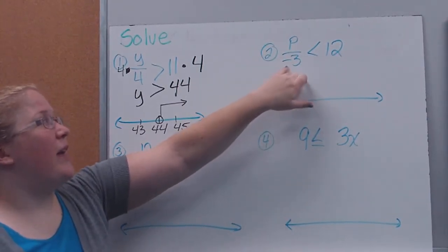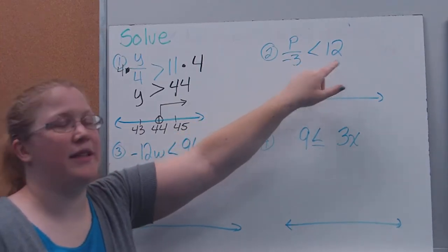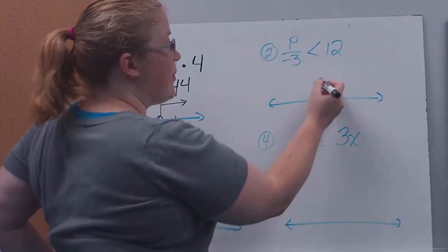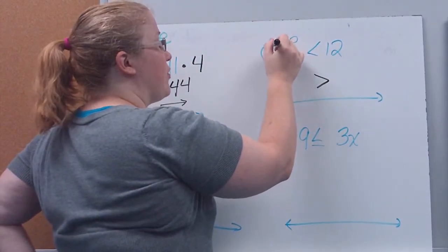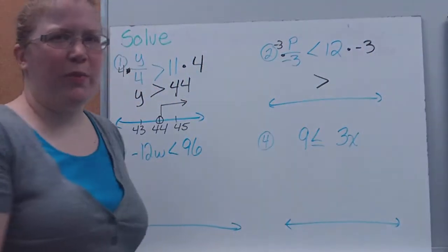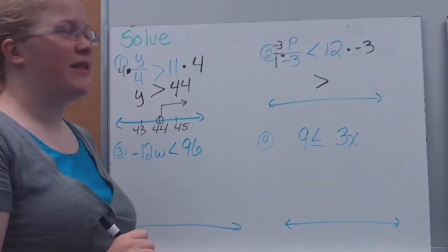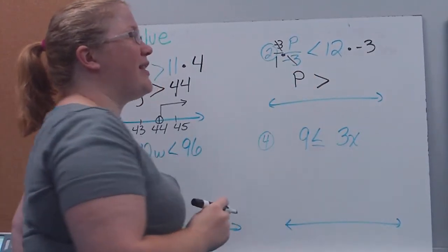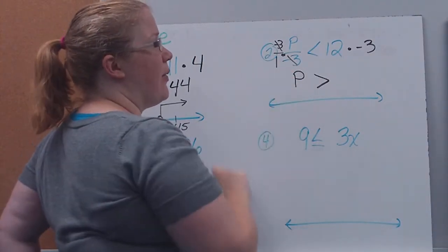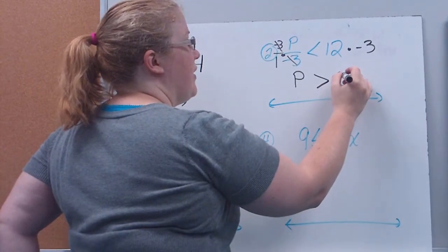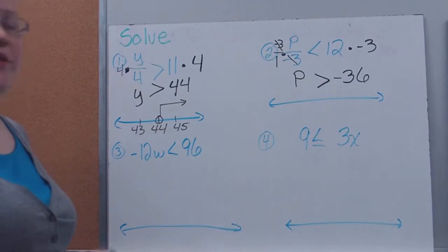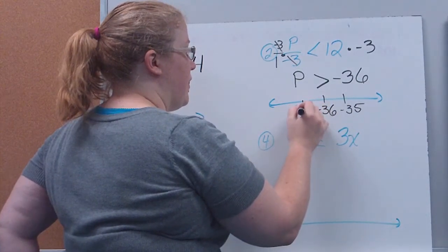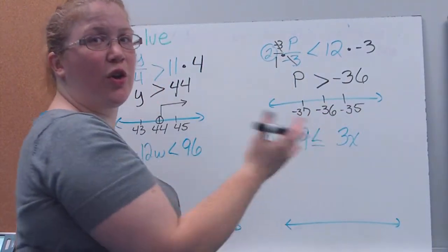Now, I'm dividing by a negative: p divided by negative 3 is less than 12. To undo the division, I'll multiply by negative 3. Since I'm multiplying by a negative, my sign is going to flip-flop. I write the negative 3 as a fraction so the numbers cancel, leaving p. 12 times negative 3 gives negative 36, and because the sign flipped, I'm looking for values of p that are greater than negative 36.